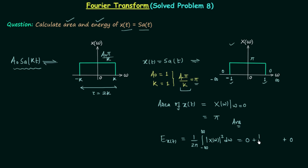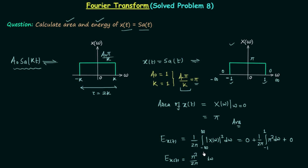So the total energy reduces to (1/2π) times the integral from -1 to 1 of |X(ω)|² dω. Since X(ω) = π from -1 to 1, we have |X(ω)|² = π². Taking π² out as a constant, the energy equals (π²/2π) times the integral from -1 to 1 dω. Evaluating the integral gives 2.